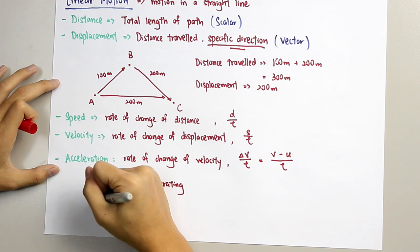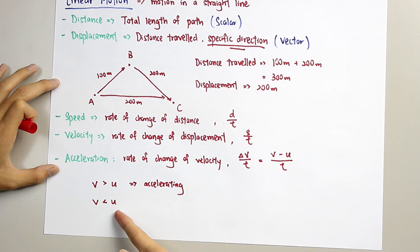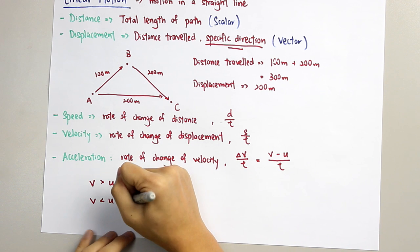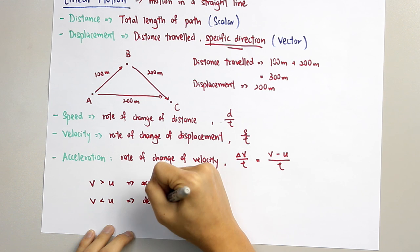And when V, the final velocity, is less than the initial velocity, which means that the car goes slower and slower, and so the car is decelerating.